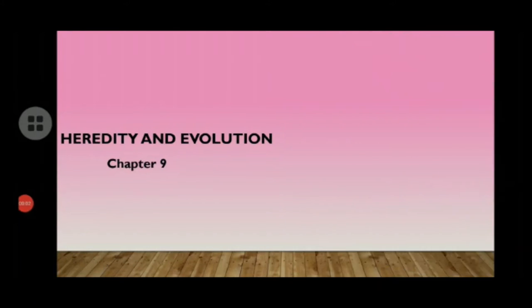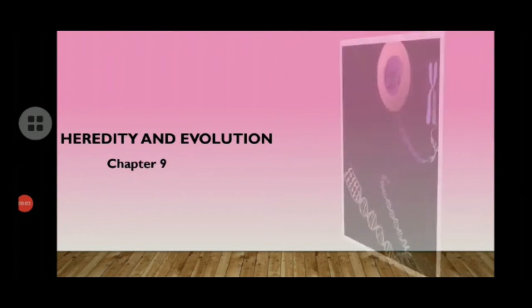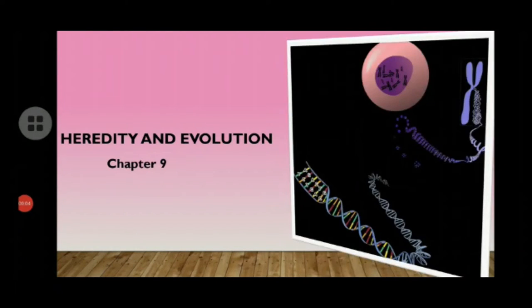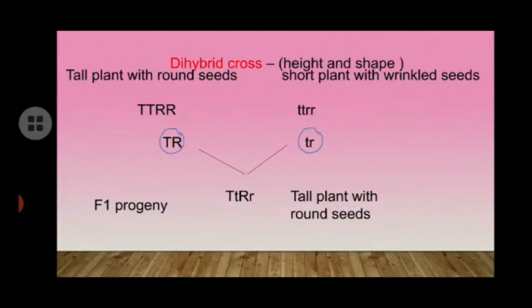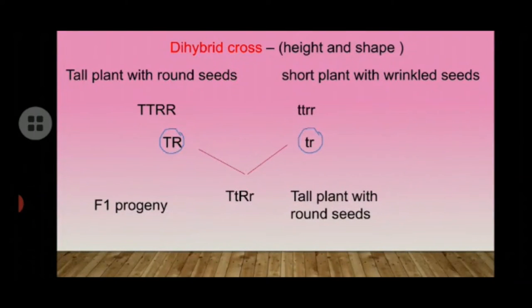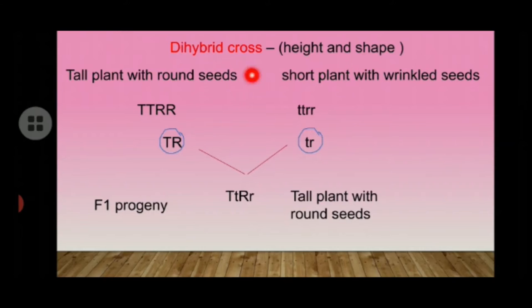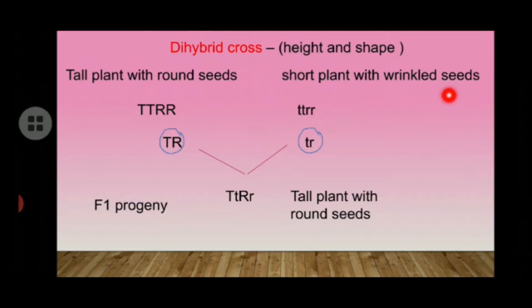Today we are going to see Heredity and Evolution Chapter 9 Part 3: Dihybrid Cross. For the Dihybrid Cross, Mendel took two characteristics such as height and seed shape. He took a tall plant with round seeds and a short plant with wrinkled seeds.